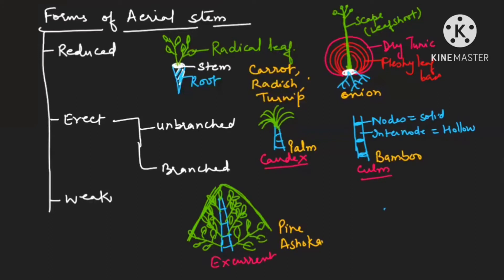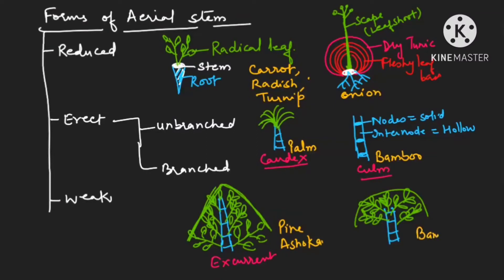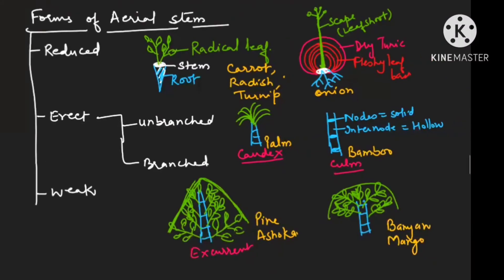Another type: the apex is stopped and is not growing; branches spread out bearing more and more leaves, with old leaves on the upper side. As a result, you get an umbrella-shaped canopy, as seen in the banyan tree and the mango tree. This type of branching is known as deliquescent.